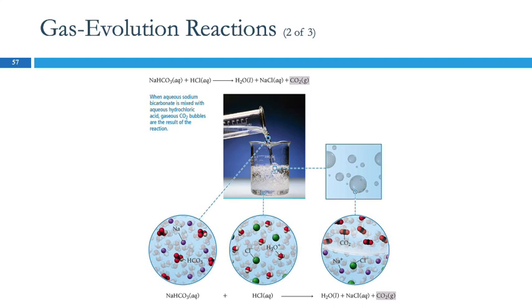So this is an illustration of that happening. Here we have the hydrogen carbonate ions and the sodium ions, the chloride ions, and the hydronium ions. The hydrogen ion from the hydronium comes over here and makes carbonic acid, but then that's not stable, and so it comes apart into CO2 and water.